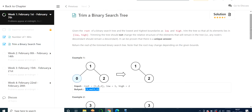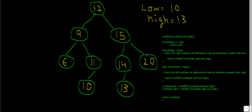Now let's jump into the approach. We will use a traversal of this BST and keep on checking each and every node, comparing it with the low and high values. Based on that comparison, we will decide whether to keep this node or not. If the current node is less than low, we don't have to include it in our resultant output, so we delete it from our solution.